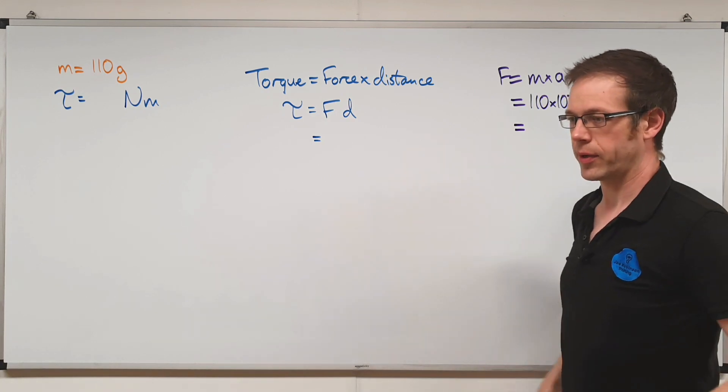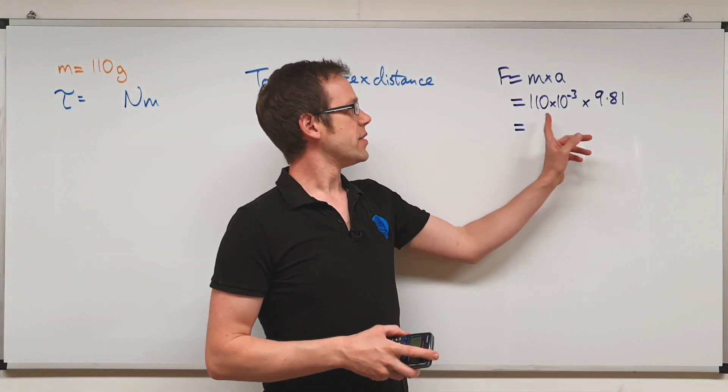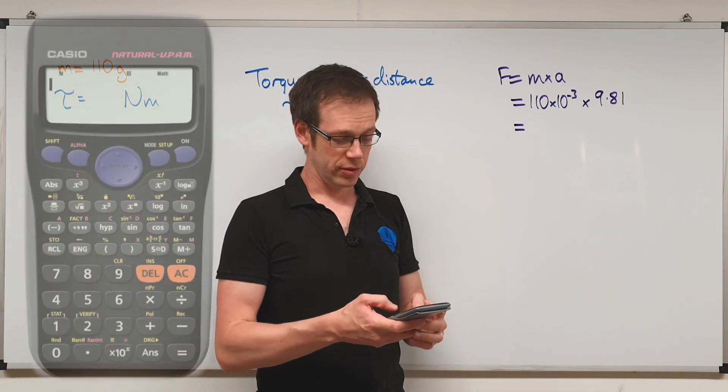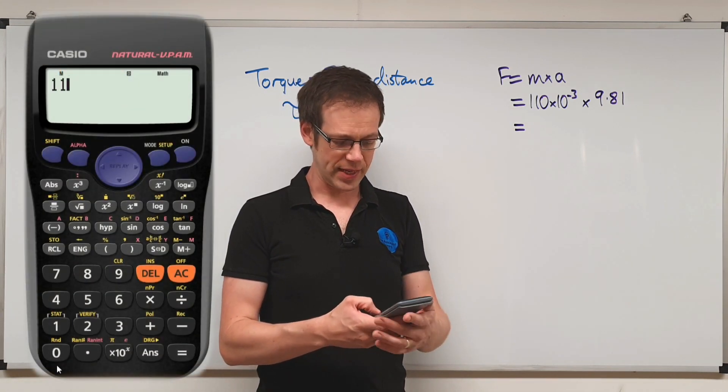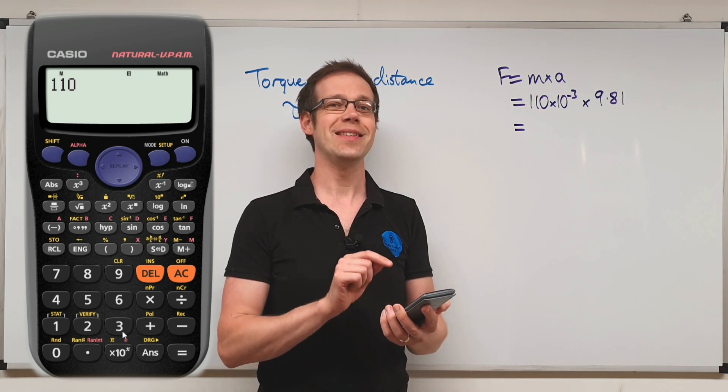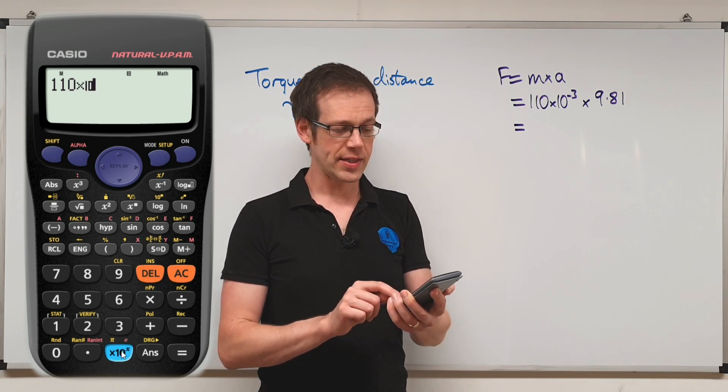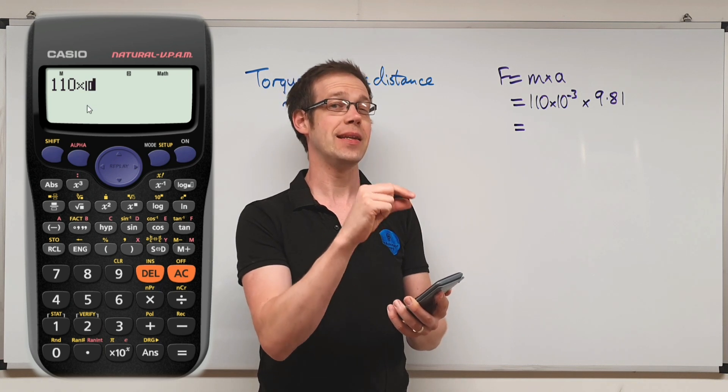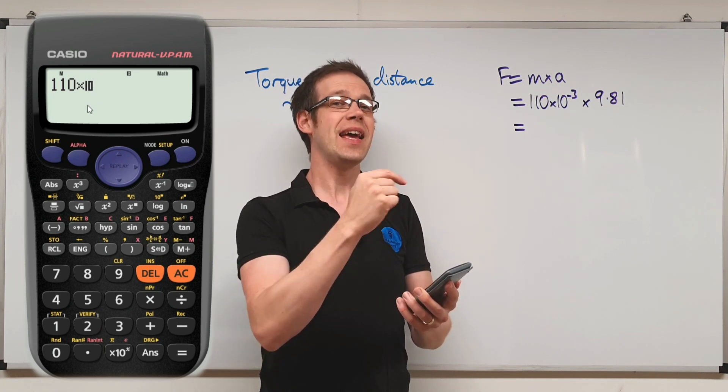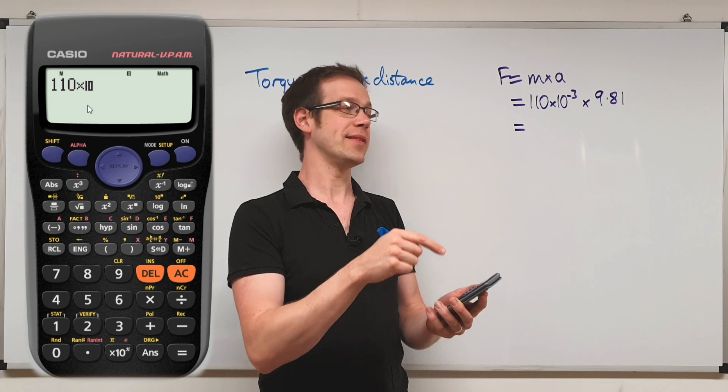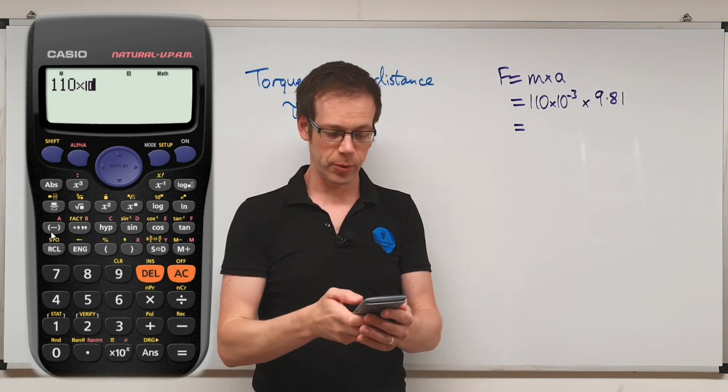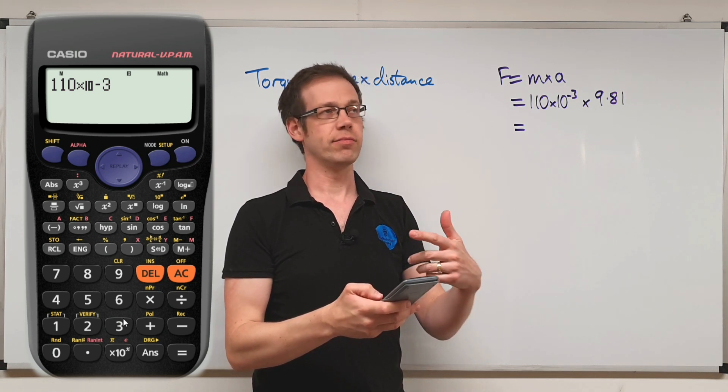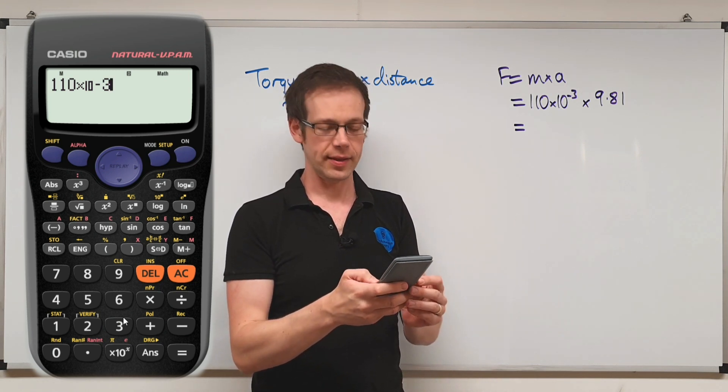So we'll put that into our calculator, nice and simply. So we'll just grab the calculator and do that. So you simply do 110 and then down at the bottom you've got this times 10 to the x button. And if you press that, it puts in a small times 10 and that means times 10 to the power of whatever the next number you put in—it treats as the power that you've got up here. So we can just put in here minus three, and that is effectively saying 0.11.